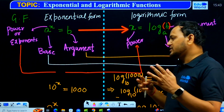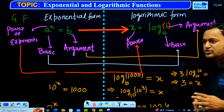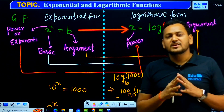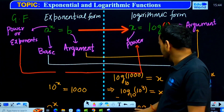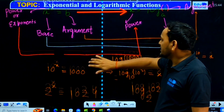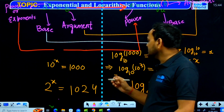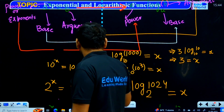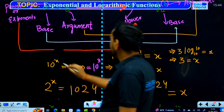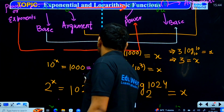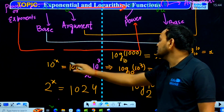Now, why do we need the logarithmic form? Let's suppose we have 10 raised to the power x equals 1000. We can easily say that 1000 is 10 to the power 3, so x equals 3. But there are cases where we cannot represent the number so easily, and we need to find x's value for uneven numbers.